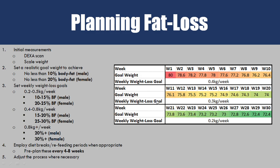Continuing at 0.3 kilos per week, we have breaks at weeks 15 and 20 — this time just maintaining rather than gaining. For the last ten weeks, as they're getting to a much leaner state below 15%, we slow to 0.2 kilograms per week with breaks at weeks 25 and 30. By week 30, they've reached their goal weight of around 72 kilos. To stick to these goals, we need to make sure we're adjusting our calories accordingly.